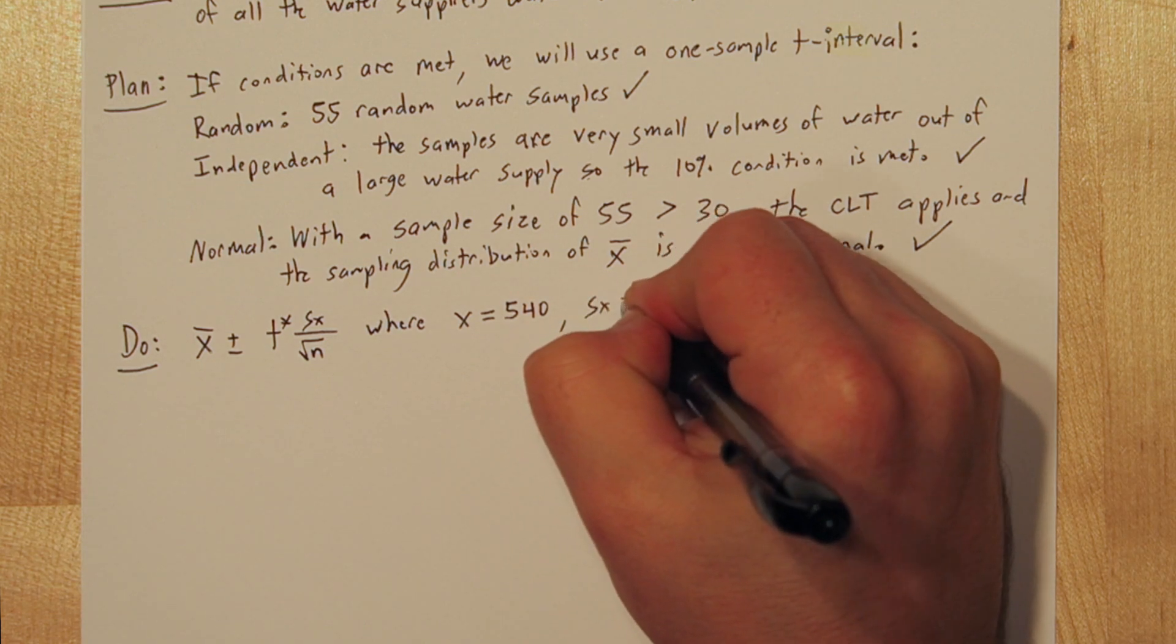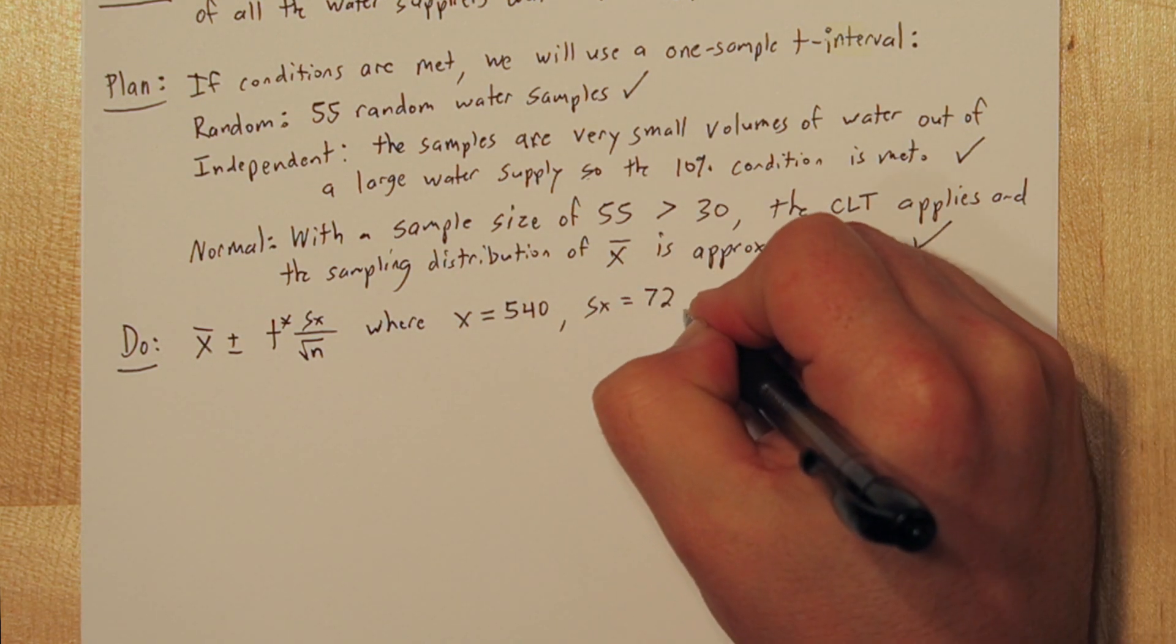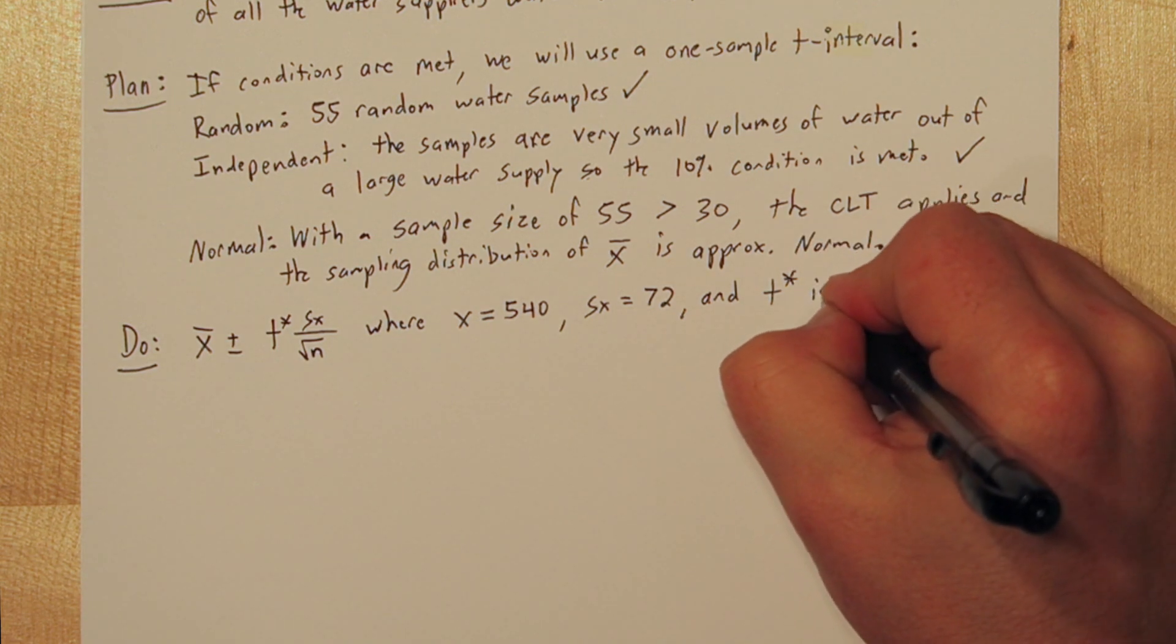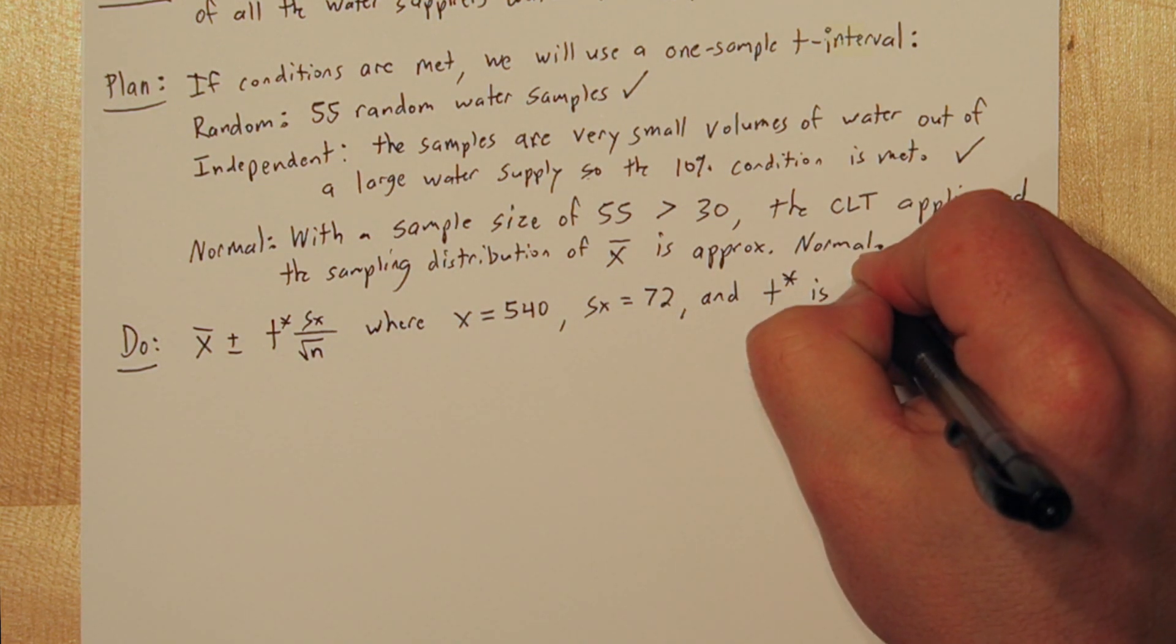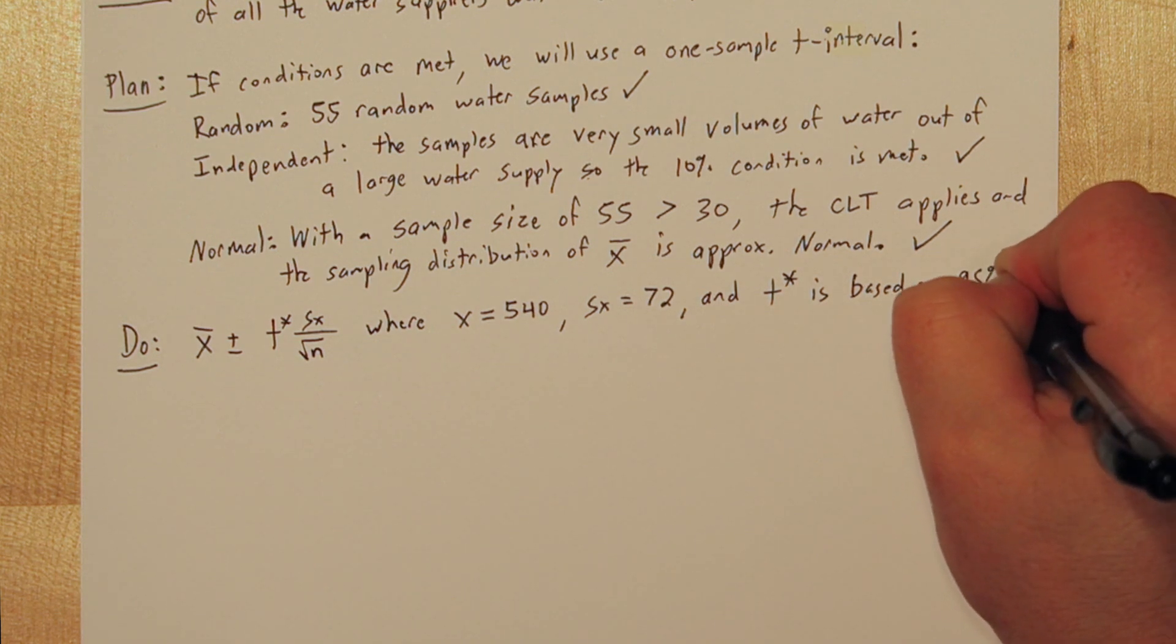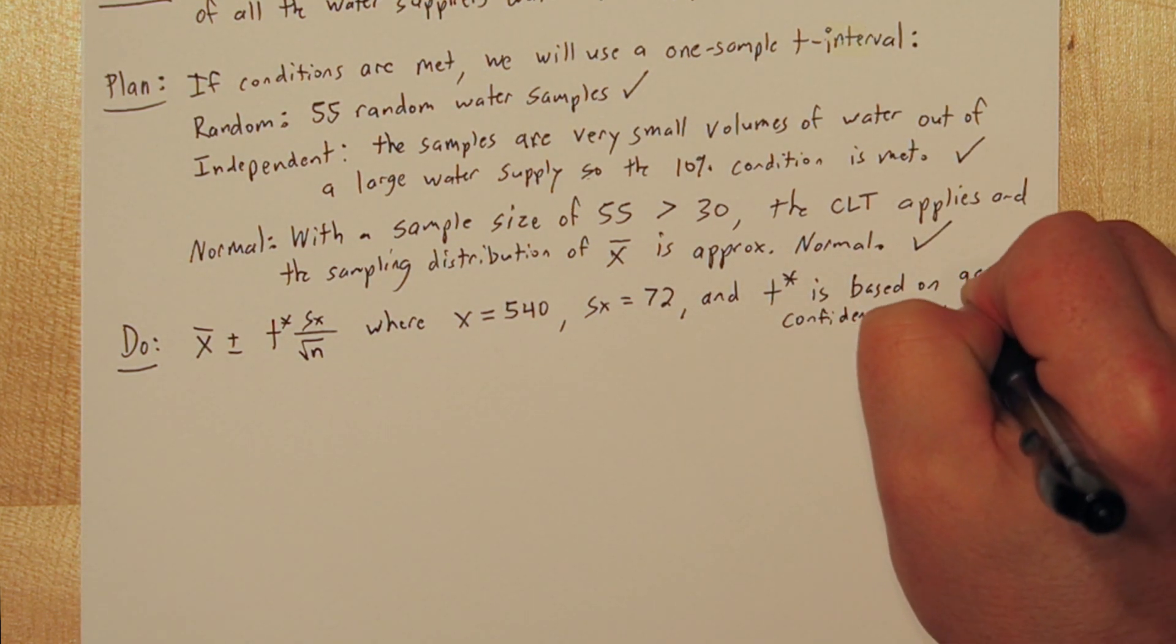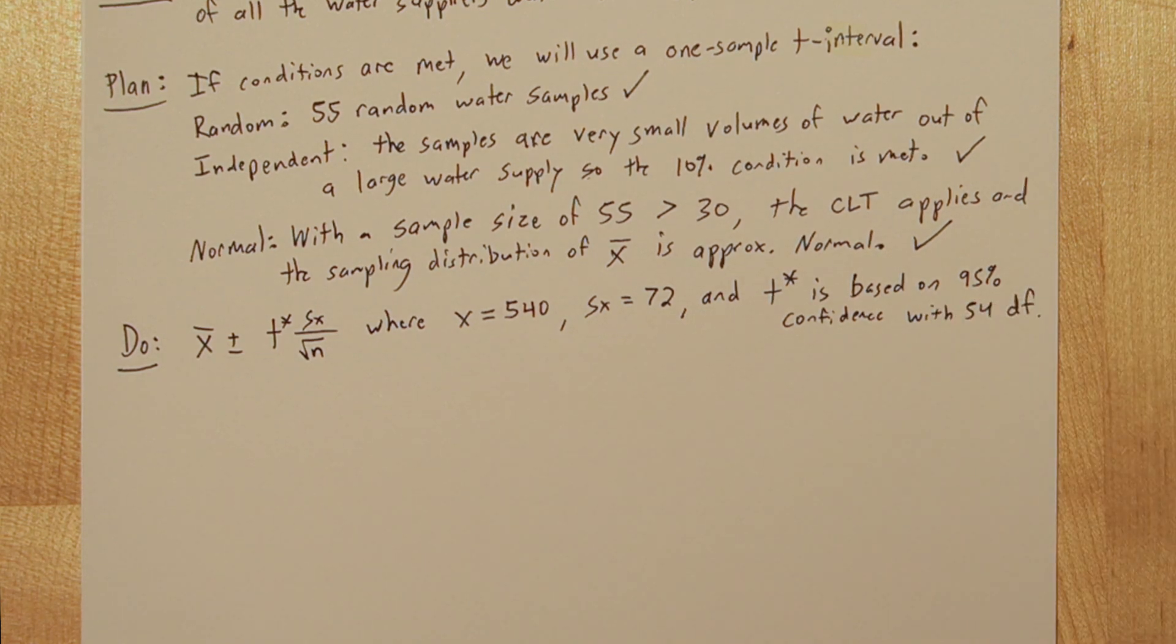So x-bar is 540, s-sub-x is 72, and t-star is going to be based on 95% confidence with 54 degrees freedom. To find that, we'll use inverse norm, and here's what we're going to do.